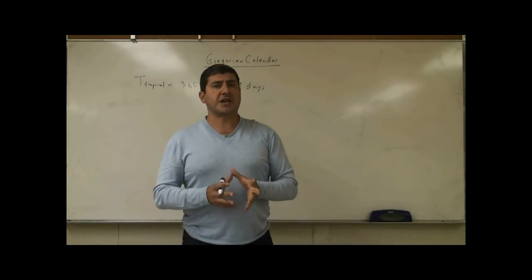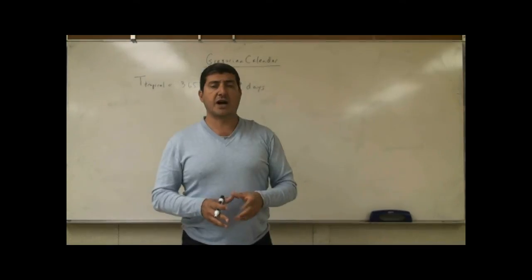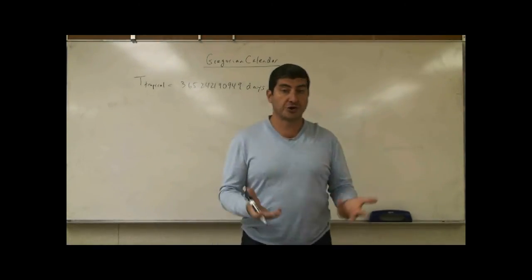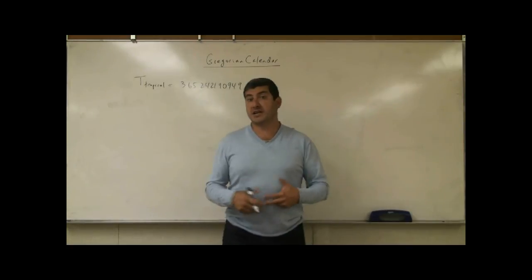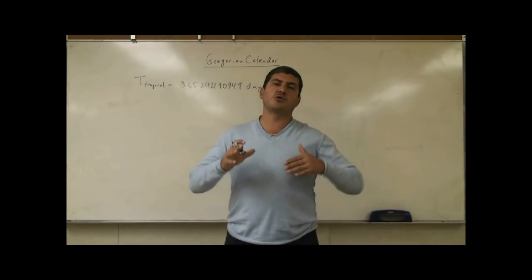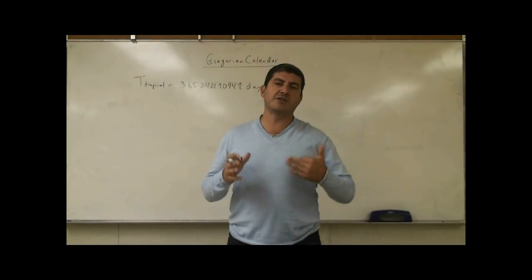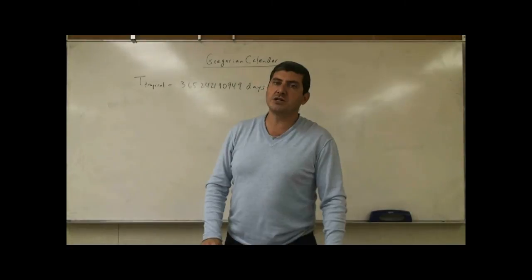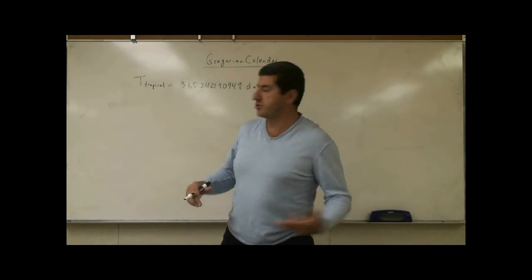Well, the Gregorian calendar is based on a year consisting of 365 and a quarter days, just like the Julian calendar. So in order to be convenient, what we've done is we've rounded this up and assumed that a year has 365 and a quarter days.